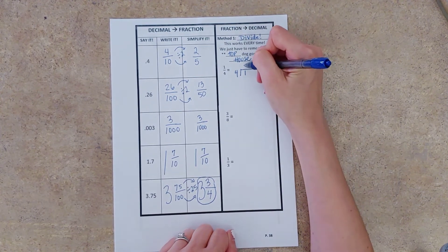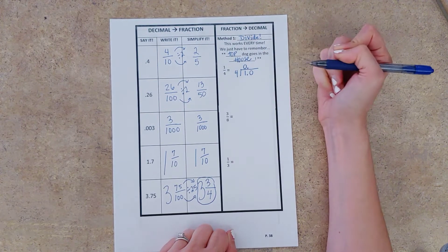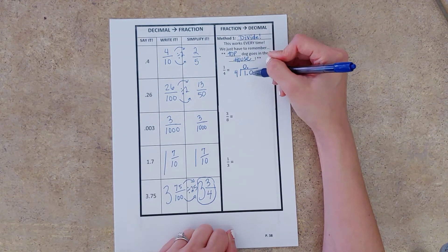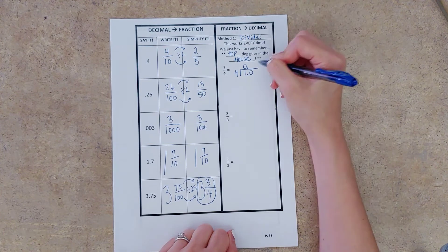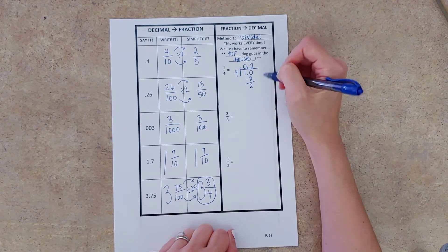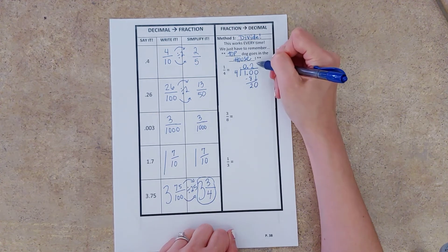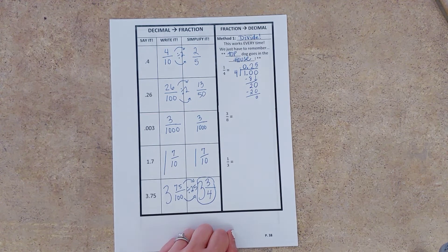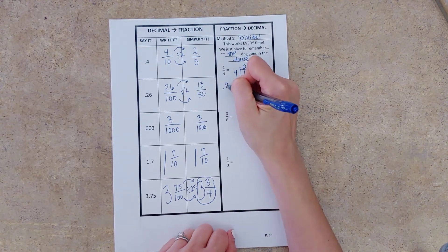Four goes into one zero times. We put our zero on top. How are we going to keep dividing? We add that decimal zero. Bring that decimal up so that we can keep dividing and not change our number, right? One decimal zero, one and zero tenths is the same thing as one whole. So we haven't changed any of the numbers we're working with. All right, so now four goes into ten two times. Two times four is eight. We're just doing long division. We have a remainder, so we're going to add another zero until we maybe see a pattern. Four goes into twenty five times. And we don't have any leftovers. So we know that one-fourth is equal to twenty-five hundredths, which is reasonable because one-fourth of a dollar is twenty-five cents.